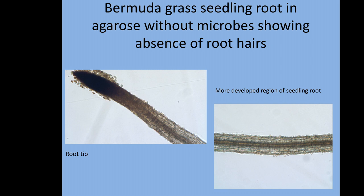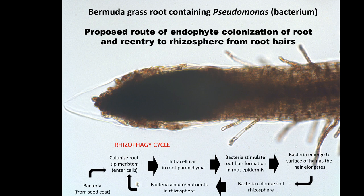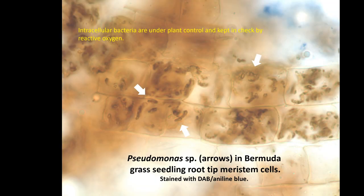This is a bermuda grass seedling without microbes — near the tip of the root you can see little stubs but no real hair development. This is bermuda grass with a Pseudomonas bacterium added — right away hairs have formed. And here you can actually see, near the meristem cells of the root, the bacteria that have gone inside those cells — these little rods, which when they first go in still have their cell walls; later on they lose those cell walls.